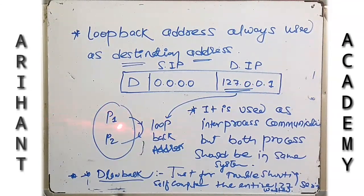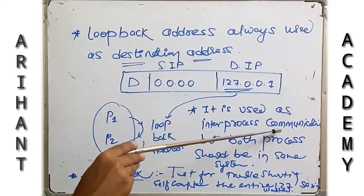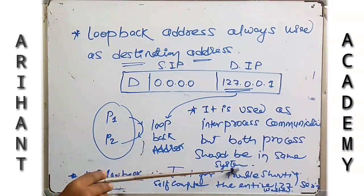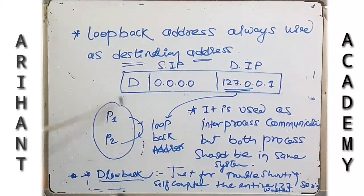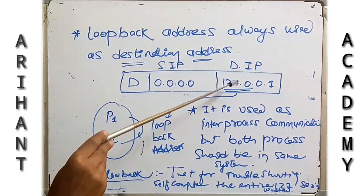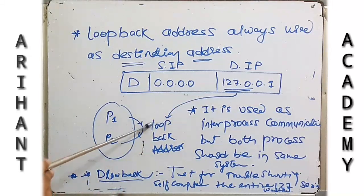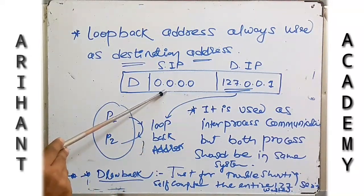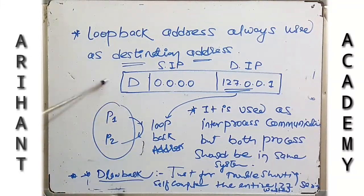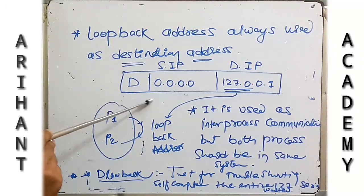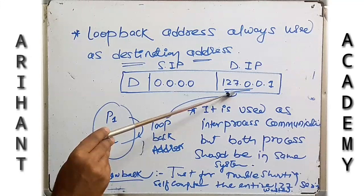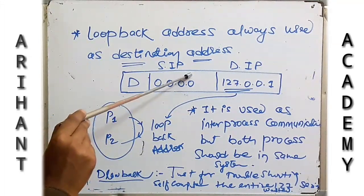Why is the loopback address used? To check whether any system which is not assigned any IP is connected to the network or not. It is used for inter-process communication, but both processes should be in the same system. Whenever we pass 127.0.0.1 as the loopback address, it will let us know whether the system is connected to the network or not. The methodology is the same: open the command prompt, then assign the loopback address via the PING command, and it will help you check whether your system is connected to the network or not.